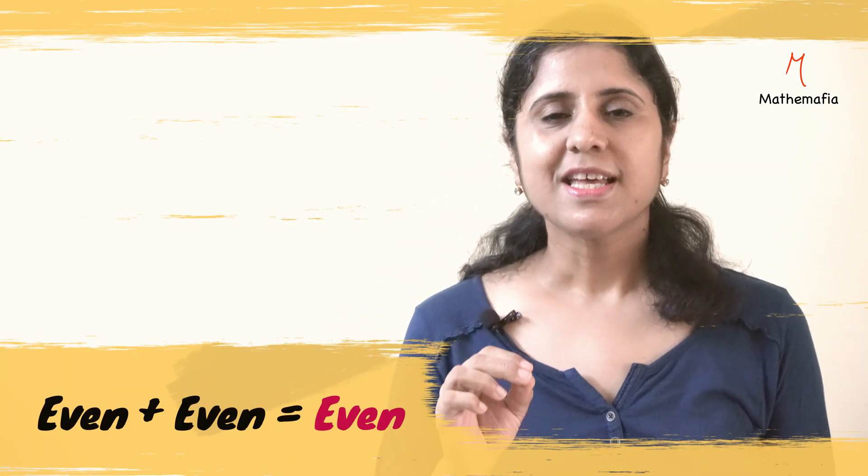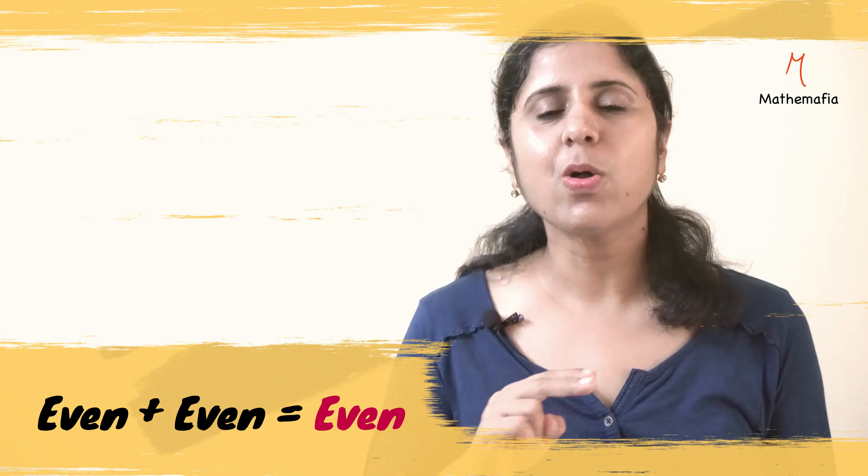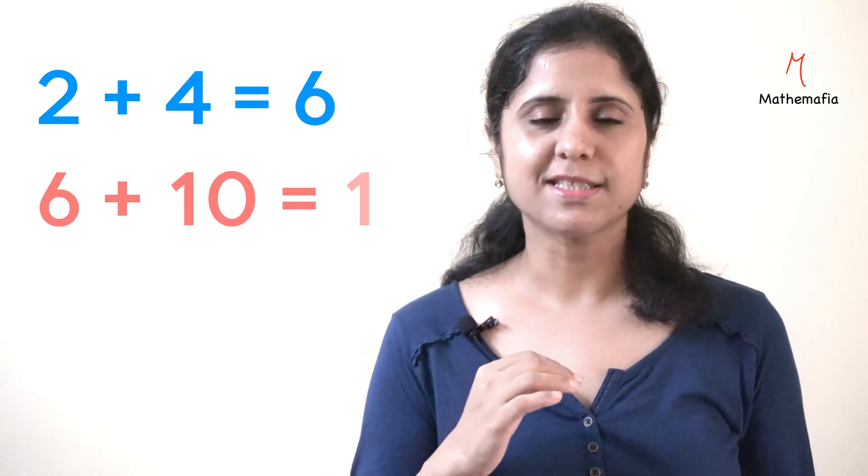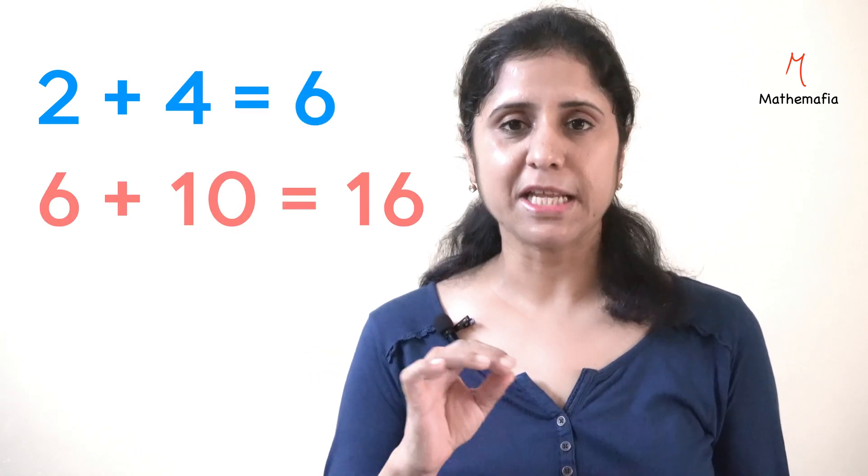The second property is, if we add two even numbers, the result is always an even number. For example, 2 plus 4 is 6, 6 plus 10 is 16. So, the answer is an even number.